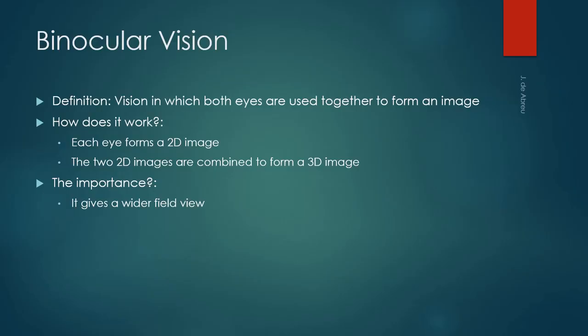You must know the definition of binocular vision and its importance. Binocular vision is vision in which both eyes are used together to form an image. Each eye forms a 2D image, and the two 2D images are combined to form a 3D image. This is important because it gives a wider field of view — having both eyes forming an image means the peripheral vision is better.